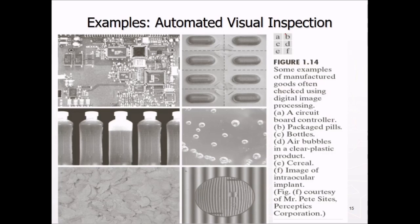These are automated visual inspection. These are some examples of manufactured goods often checked using digital image processing. This is a circuit board controller. This is packaged pills. These are actually the bottles you can see. This is not filled up. And these are air bubbles in a clear plastic product. These are cereals. These are image of intraocular implant.